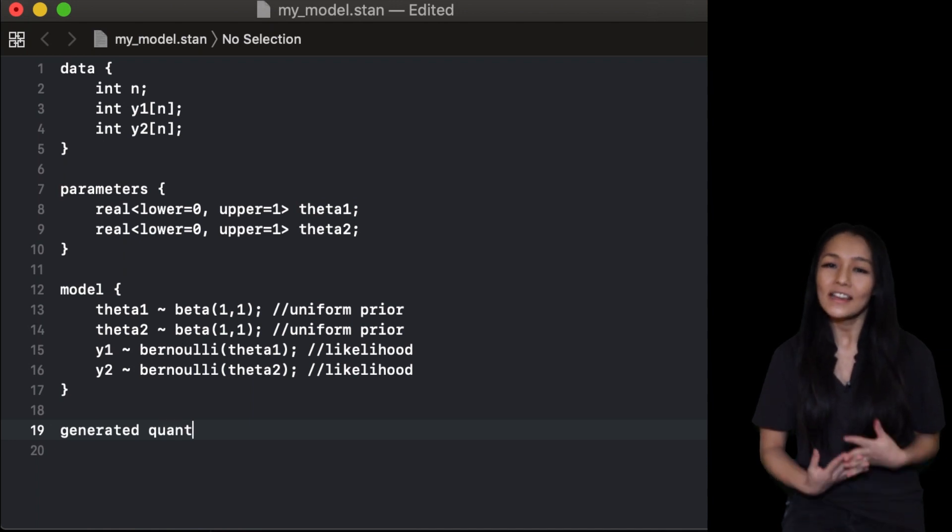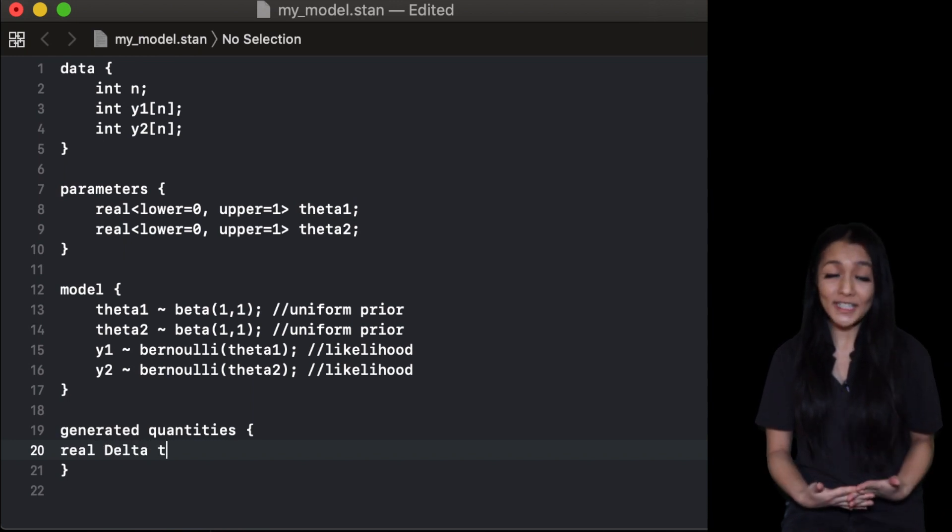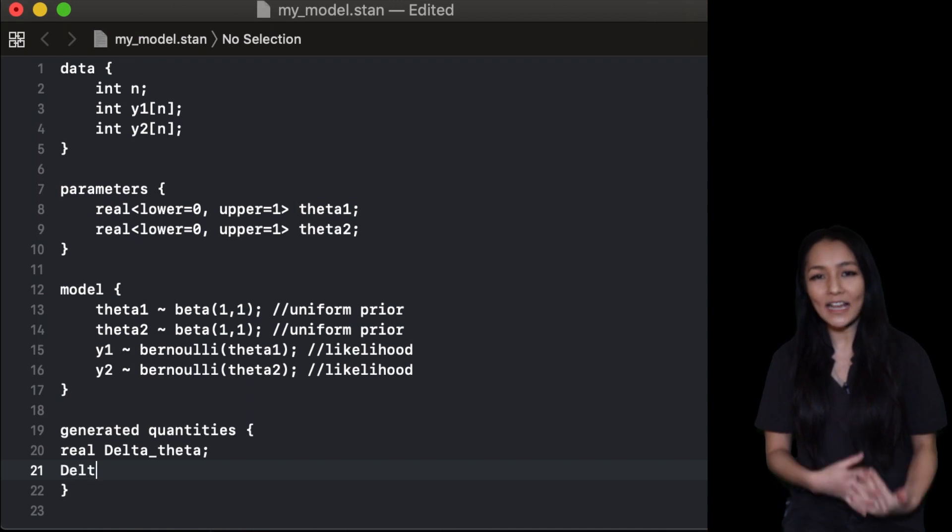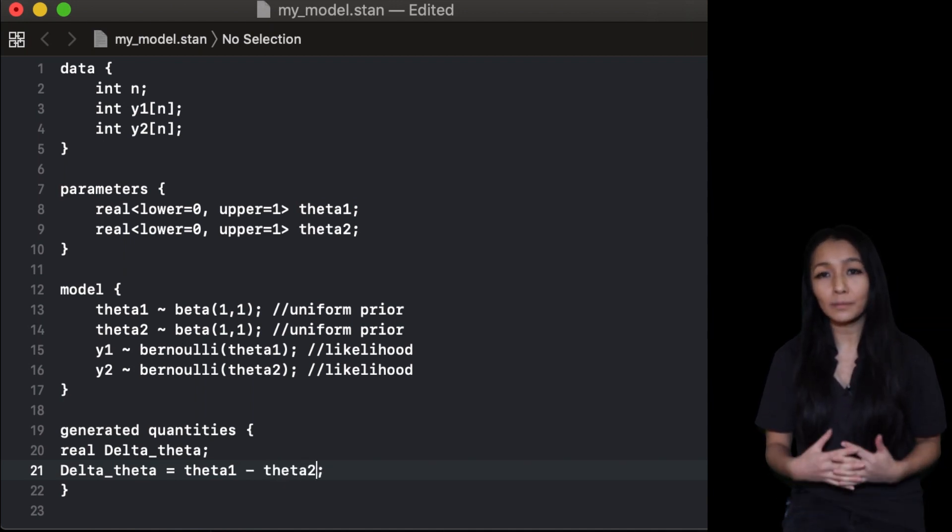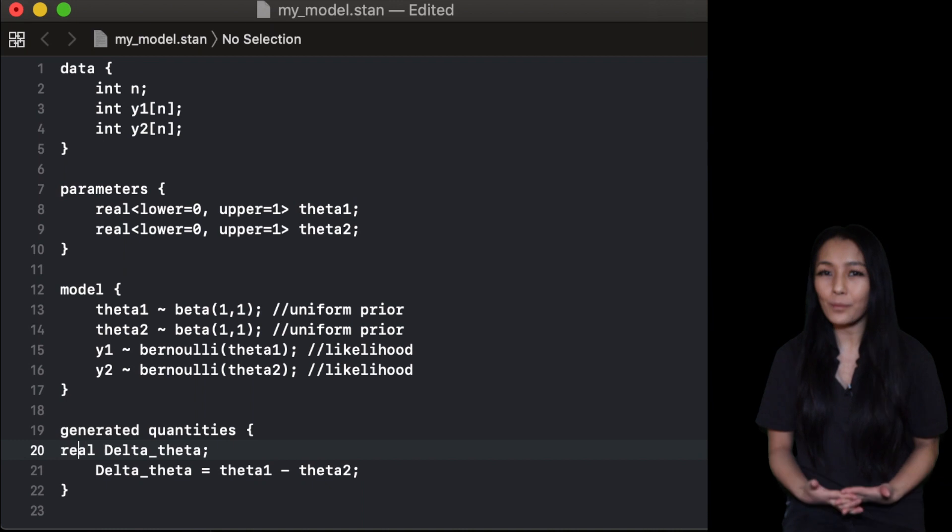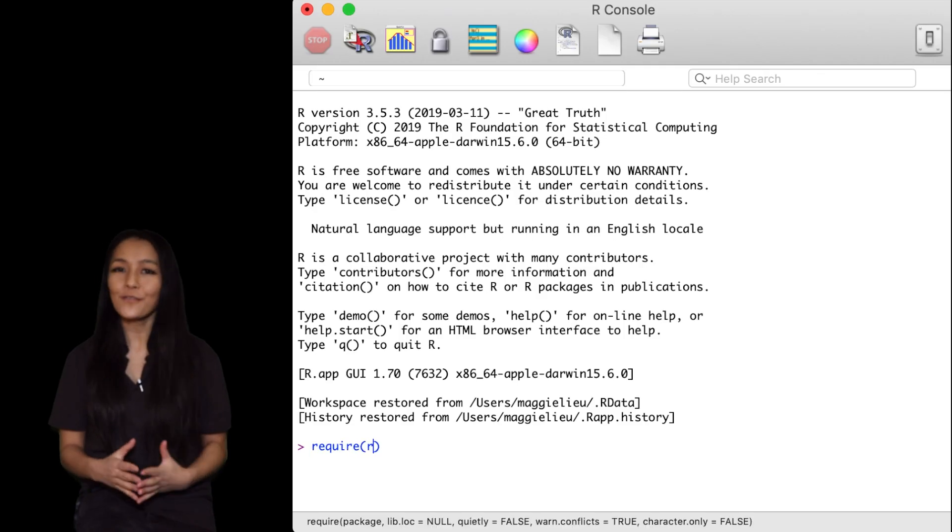Lastly, we will include a generated quantities block. This is where we include variables that we're interested in that are computed from previously declared variables. Here we will add a delta theta term for a direct comparison between the probabilities of the two click-through rates. This block is completely optional but it will help much more later on.